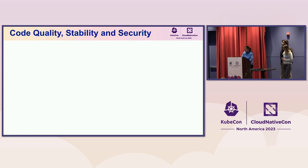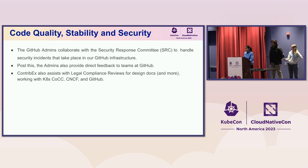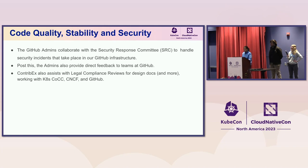Let's talk about code quality, stability, and security. SIG ContribX helps there as well. We have a subproject called GitHub Administration. That group collaborates with the Security Response Committee and Code of Conduct Committee to handle security incidents that take place in our GitHub infrastructure and around the community. The admins also provide direct feedback to GitHub — we have a monthly meeting with the GitHub team. ContribX also helps other SIGs if they need legal compliance reviews for their design documents. For example, we recently had one from SIG Testing where we needed to work with the Code of Conduct Committee, Kubernetes, CNCF, and get some advice from GitHub.